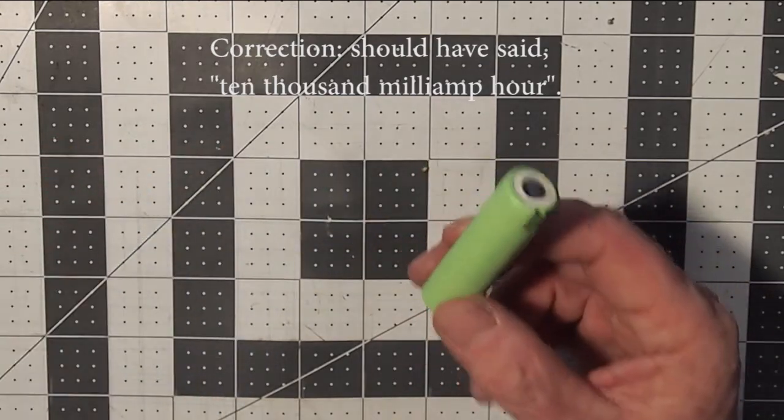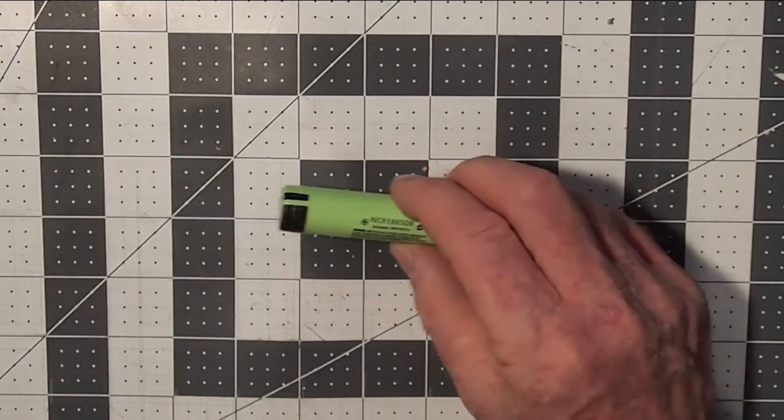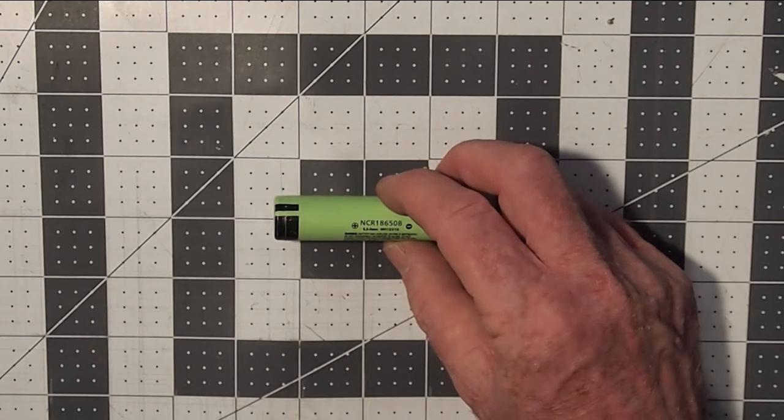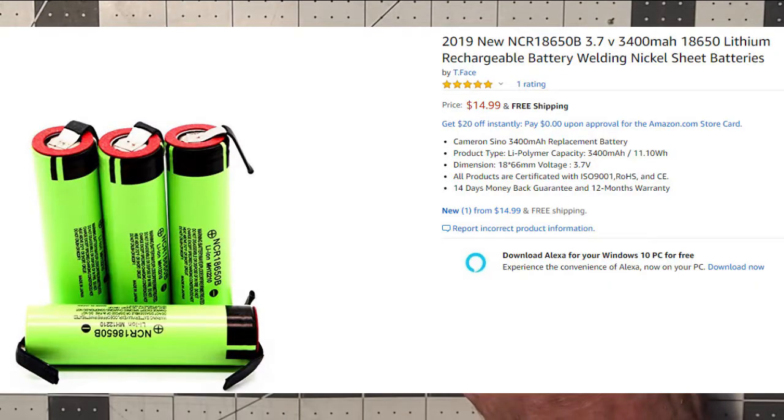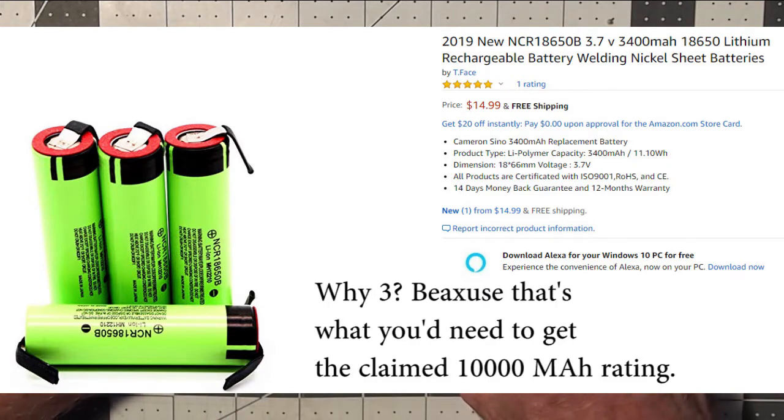Based on that, look at the price that these generally sell for, roughly in the 14 to 15 dollar range for each cell, which means for three of these cells you're gonna pay anywhere in the vicinity of 40 some odd dollars.